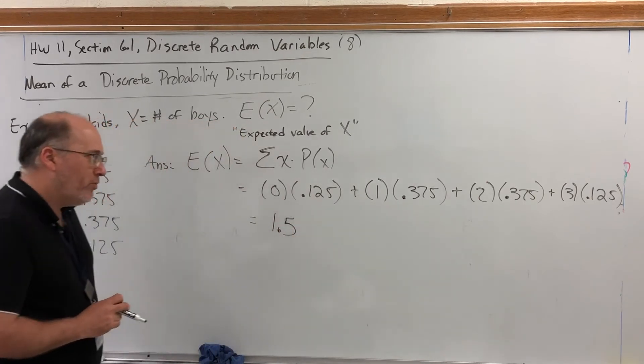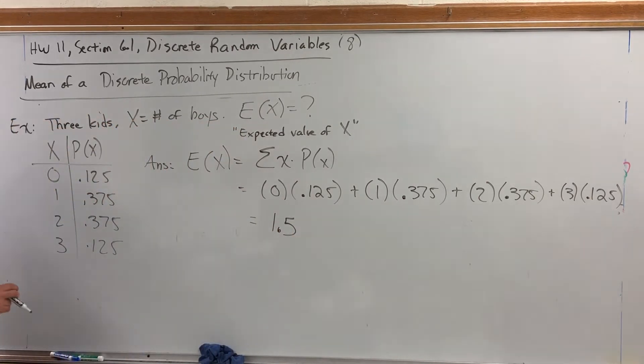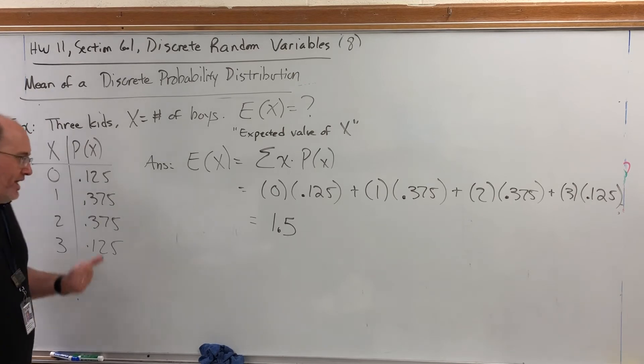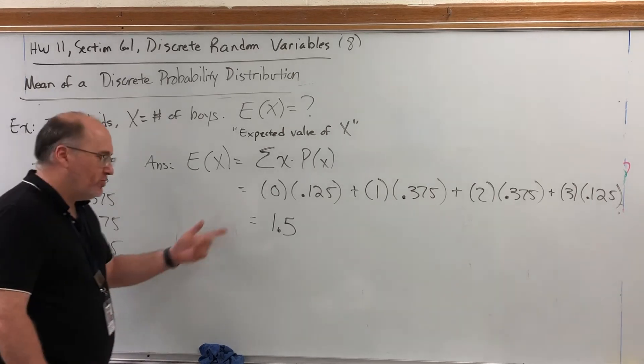If you're wondering what I did, you may recall that these were just fractions: 1 eighth, 3 eighths, 3 eighths, 1 eighth. I ignored the first one because it was times zero. And what I did over here is multiply those fractions times these numbers and added them. It wasn't that bad. And it came up to be 12 eighths, which is 1.5.